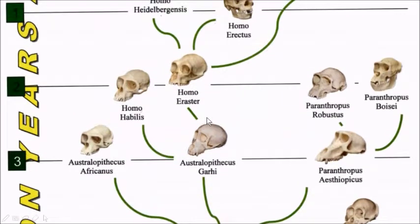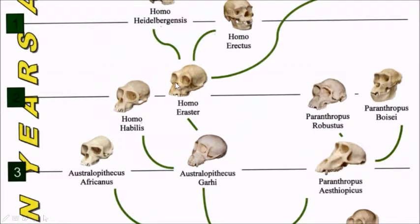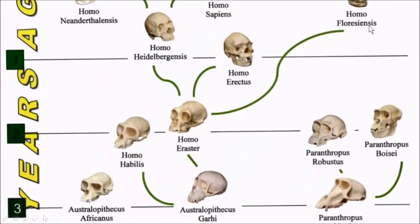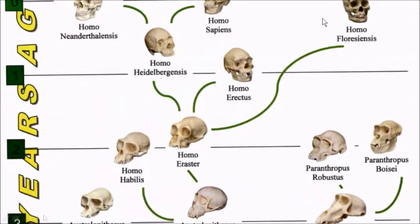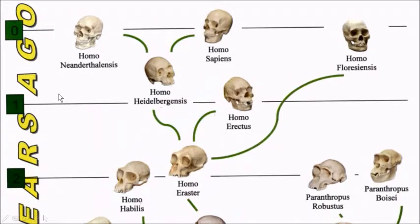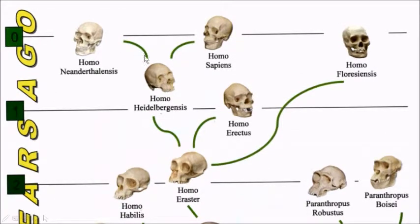Australopithecus garhi transitions through Homo habilis to Homo ergaster, also about one million years later. Homo ergaster branches in three directions, two of which are dead ends: Homo floresiensis two million years later, and Homo erectus one million years later. The third direction leads to Homo heidelbergensis one and a half million years later, or a half million years ago. Homo heidelbergensis branches to Homo neanderthalensis, which died out recently, and to Homo sapiens, which continues to present. You will have noted along the way the gradual progression from protruding brow to flat brow, brain cavity enlarging and shifting from behind to above the face, and the gradual recession of a large and protruding jawbone. There are variations in these characteristics between the branches of the tree.